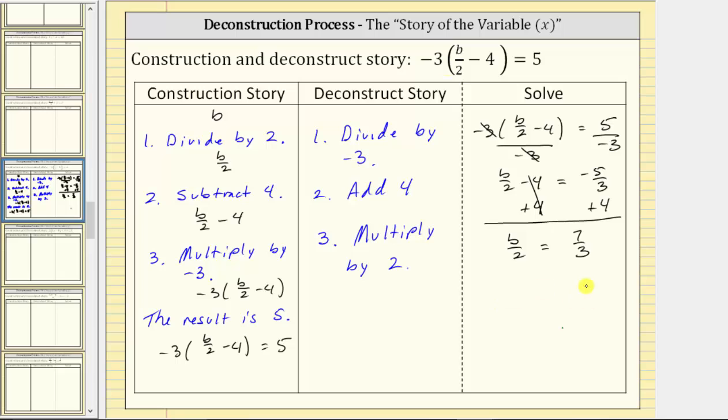The last step in the deconstruct story is multiply by two. So now we multiply both sides of the equation by two. We are changing the order of the multiplication here using the commutative property. And because both sides of the equation are in fraction form, we could write two as a fraction with a denominator of one. Simplifying before multiplying, two divided by two simplifies to one. One times B is B. On the right, nothing simplifies. We multiply the numerators and denominators, which gives us 14-thirds.